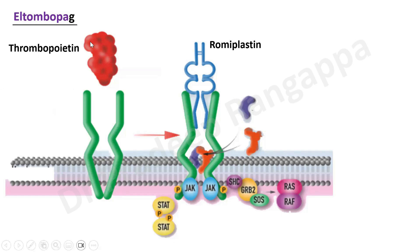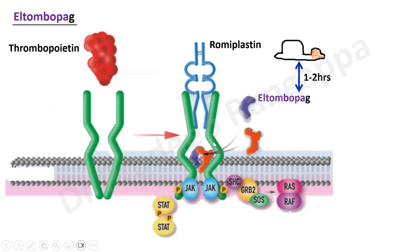Looking at a pictorial representation of receptor binding: romiplostim acts on one component or area of the thrombopoietin receptor, while eltrombopag — shown in red — acts at the basal part of this receptor. These two drugs bind at different sites on the thrombopoietin receptor.